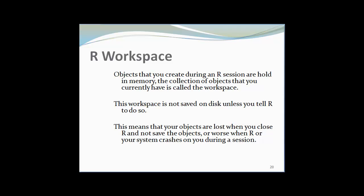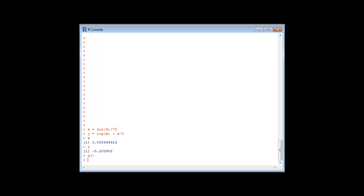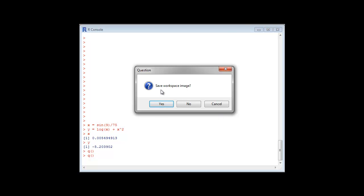Something about the R workspace: the objects that you create during an R session are held in memory, and the collection of objects that you currently have is called the workspace. This workspace is not saved on the disk unless you tell R to do so. This is my R console. I want to close, I will click here. It will ask me to save the workspace image or not. If I do yes, then it will save. If I do no, then it will not save. If you don't save the workspace, that means your objects are lost.